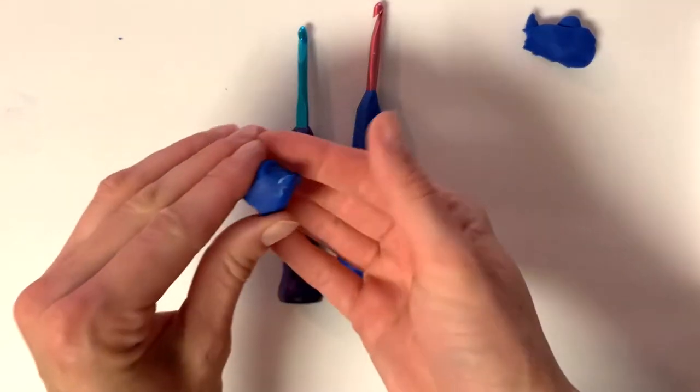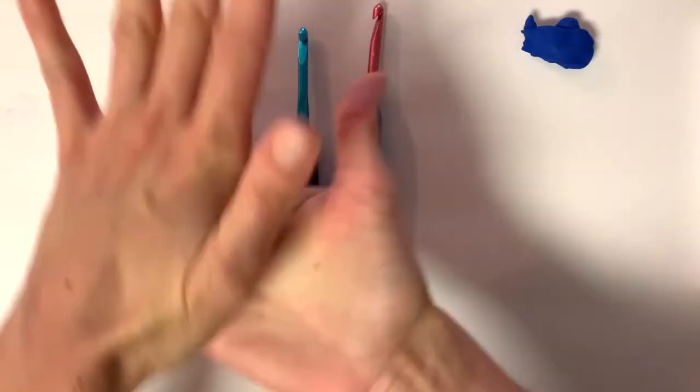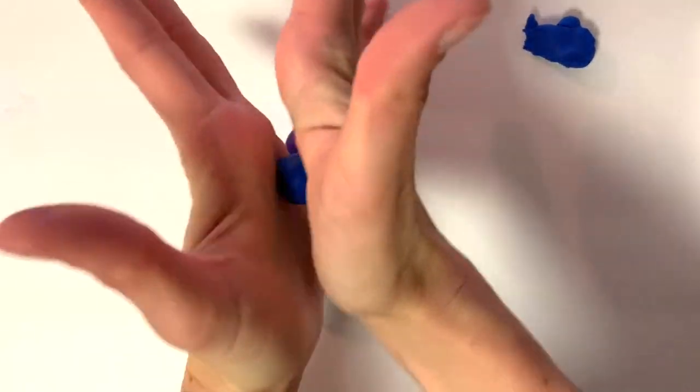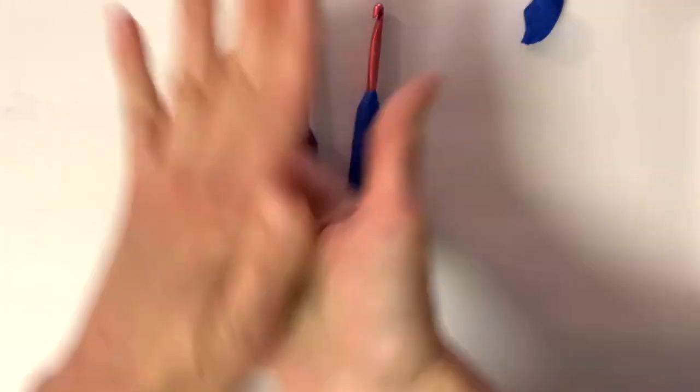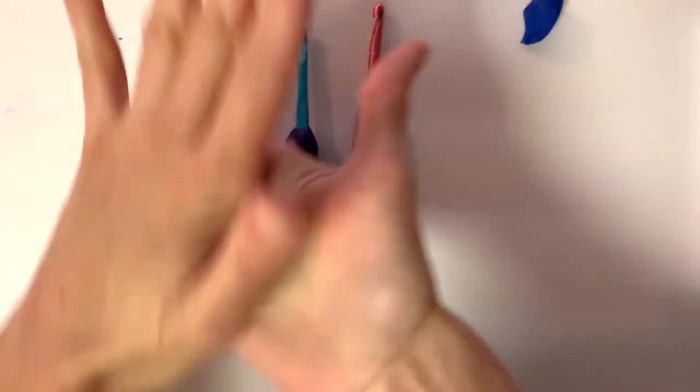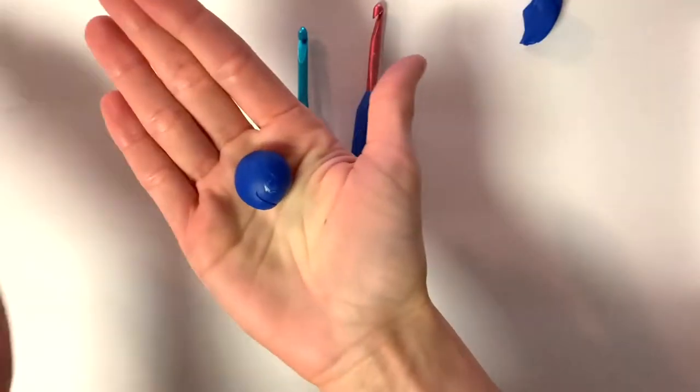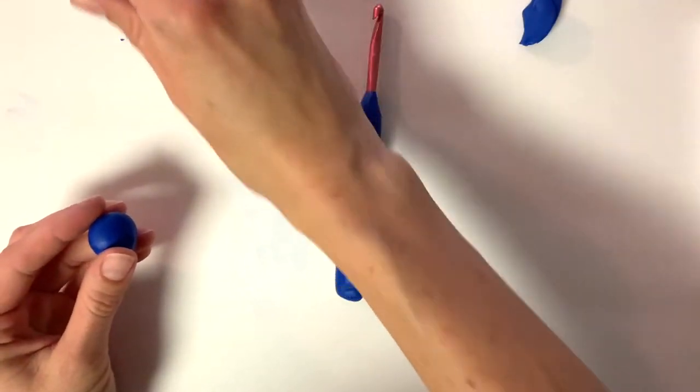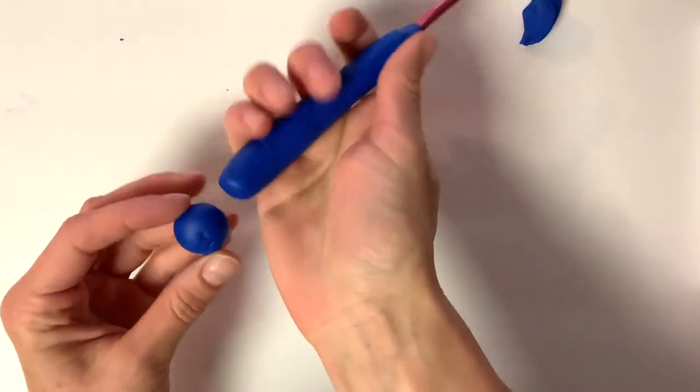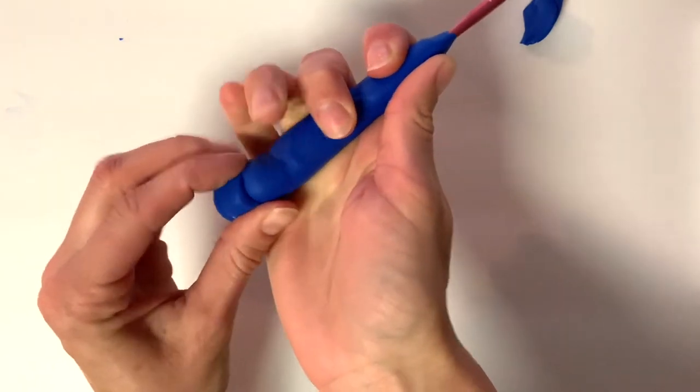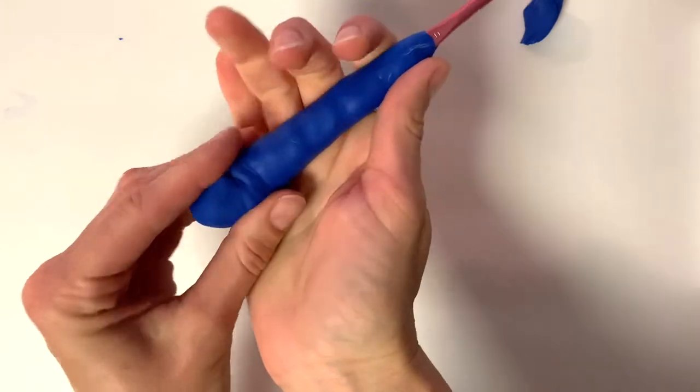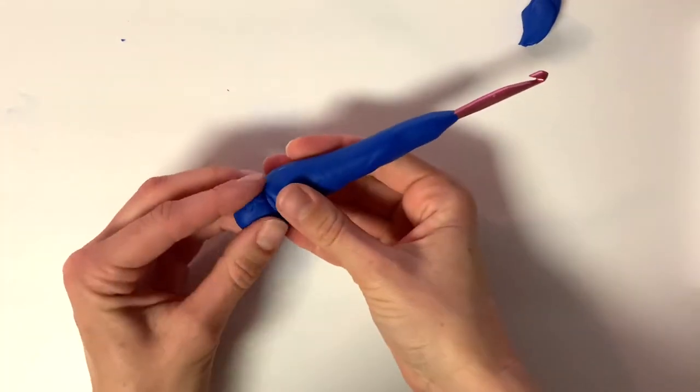So you're going to take an extra piece of clay and roll it into a ball in between your hands. Once you've got the ball, you can add some more if you need to. You do want it to be fairly thick because you don't want the hook to poke through the bottom. So here you're going to take the ball and push it on the bottom of your hook and mold it to the bottom to kind of make it like an extended piece of your hook handle.